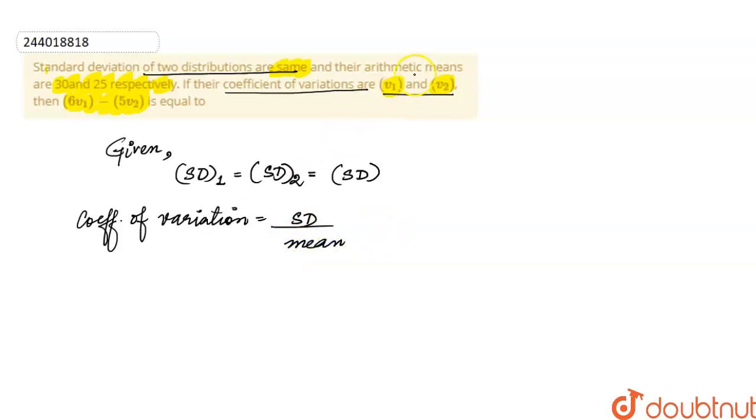The coefficient of variation of the first, v1, is standard deviation divided by 30. And v2 is standard deviation divided by 25.